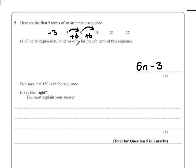It should work for all of them. Let's double check. We've got 1, 2, 3, 4, 5. The 5th number in the sequence would be 6 times 5, which is 30. Take away 3, 27. It's always worth checking that your rule actually works.